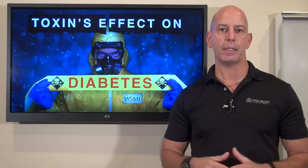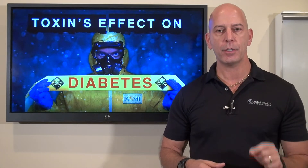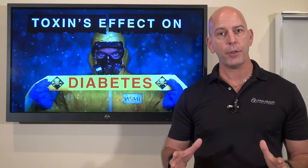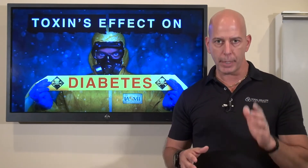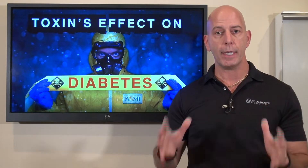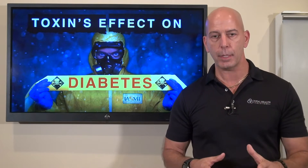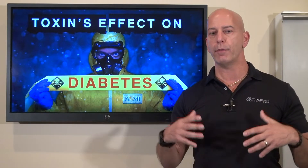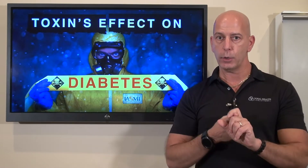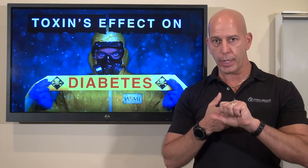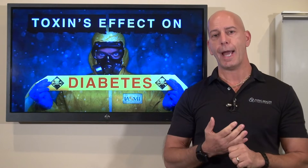How do toxins affect diabetes? The number one thing that toxins do in our bodies is create inflammation. If anything creates inflammation, that's going to be the most important factor we have to address to beat this. And guys, this is something we can beat — diabetes isn't a death sentence anymore. In our office, we attack it in four ways: nutritionally, with exercise, through neurological methods, and through detox.